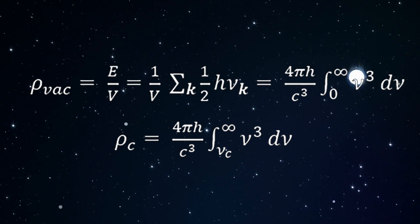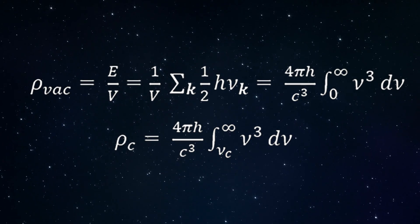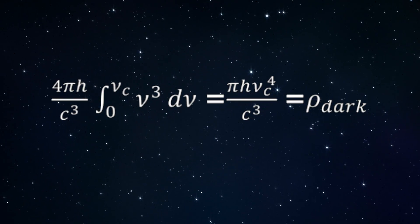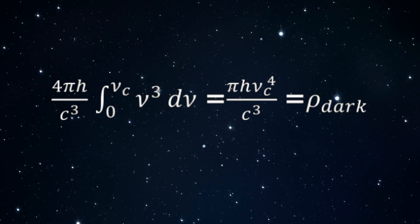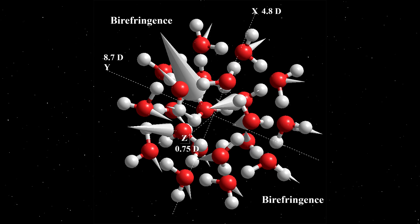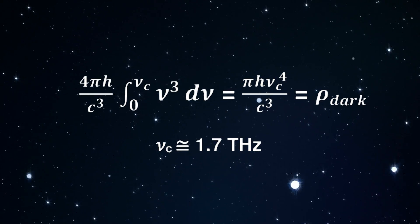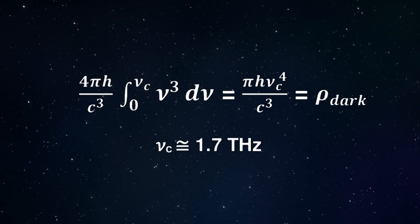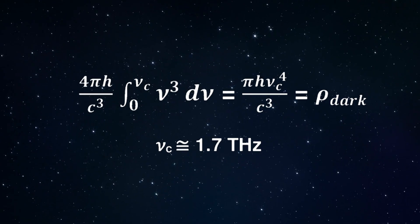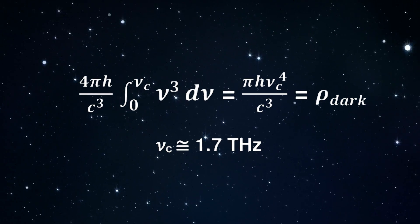Nu sub c is the cut-off vibrational frequency of the ejected water nanoclusters. This leaves the finite quantity shown to be identified with the dark energy density. For the prominent pentagonal dodecahedral water nanocluster, the cut-off vibrational frequency is approximately 1.7 terahertz. This formula produces the correct, small dark energy density, and consequently, the small cosmological constant.